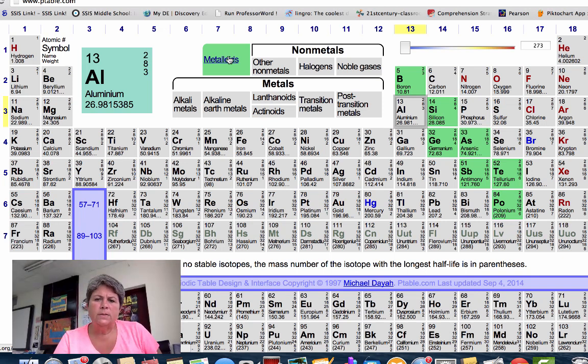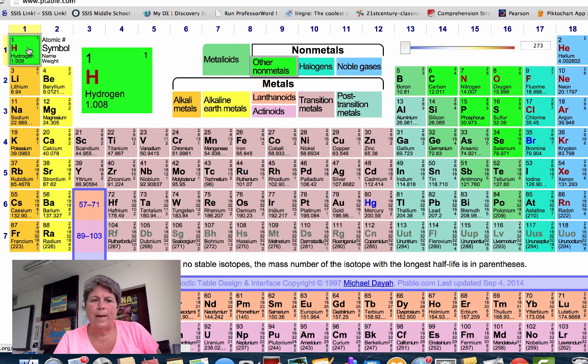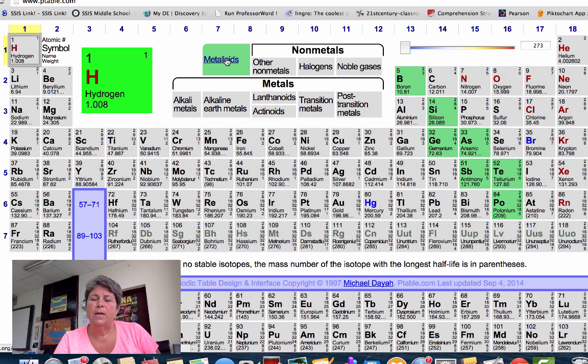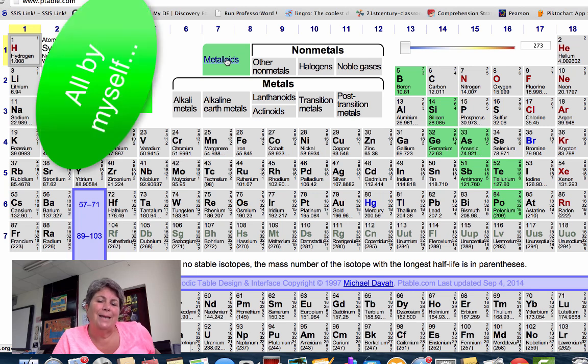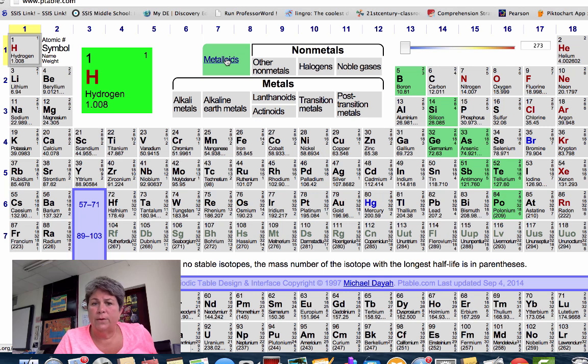I also want to remind you very quickly that even though hydrogen is to the left of the staircase, you see hydrogen over there to the very far upper left, remember that it is not a metal. It's put in group one because it has similar chemical properties to all of the other elements in group one. Specifically, it has one valence electron. But it is a gas. It's not a metal.